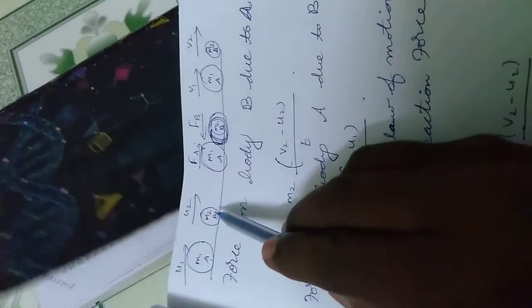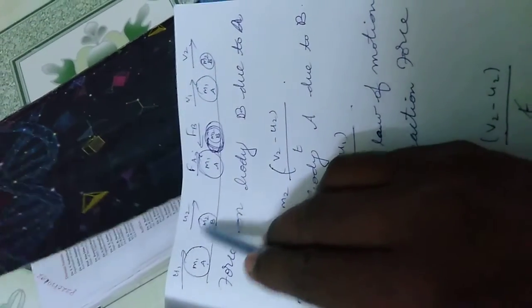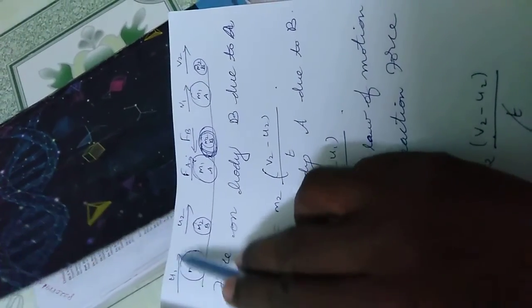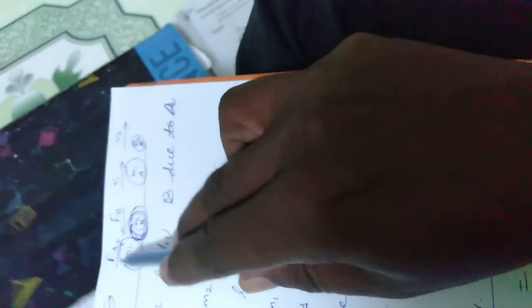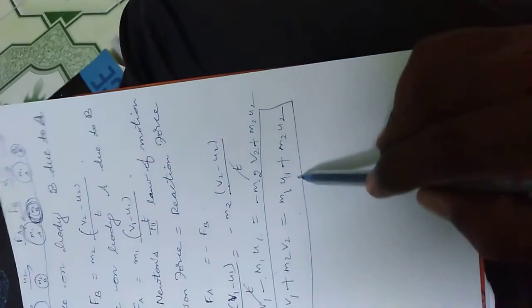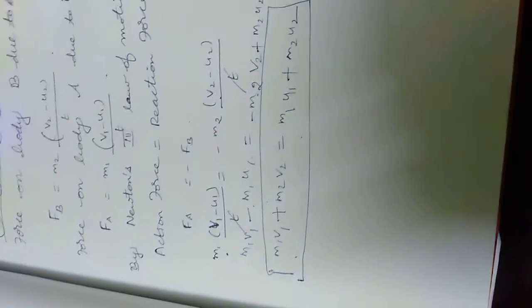M1 and M2 are the masses of the objects. U1 and U2 are initial velocities, V1 and V2 are final velocities. The final equation is M1V1 plus M2V2 equals M1U1 plus M2U2. Thank you.